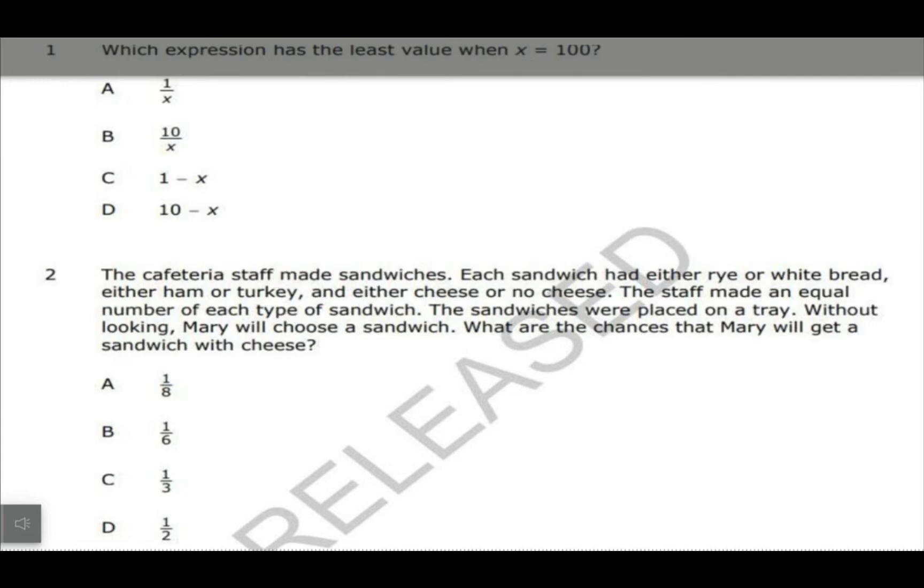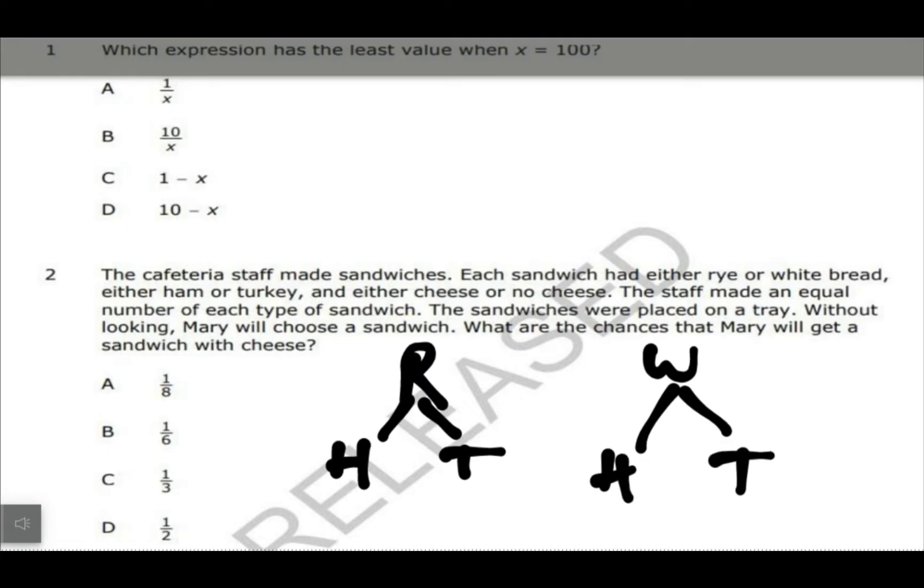Second one is a probability question. You could do a tree diagram for this one. It says the cafeteria staff made sandwiches. Each sandwich was made on either rye or white bread, so I would do R, W. Ham or turkey, so then I can do H and T, H and T.